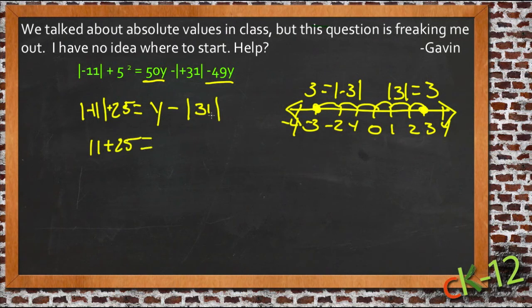And y minus the absolute value of 31, which is just 31. So y minus 31 on the right.